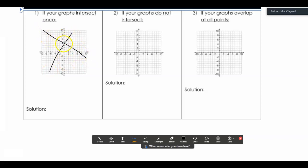So say they intersect once. That's our solution. And that point for us was 0, 4. They don't intersect at all, so we have parallel lines. We'd say no solution, parallel lines.